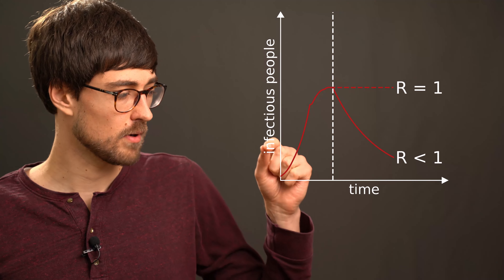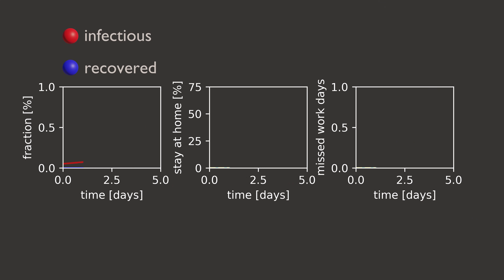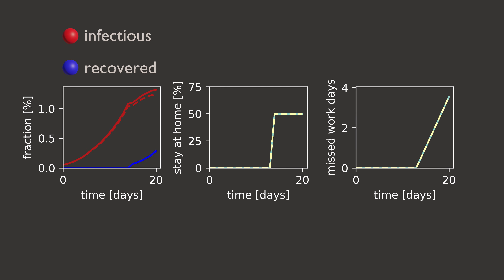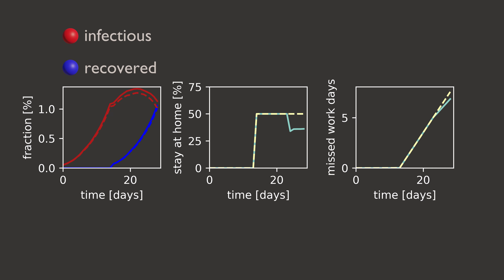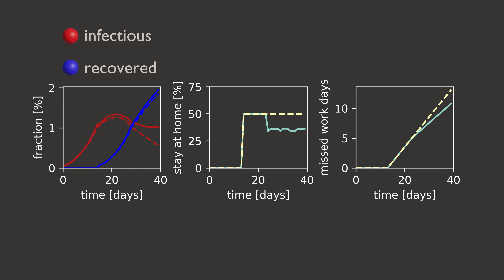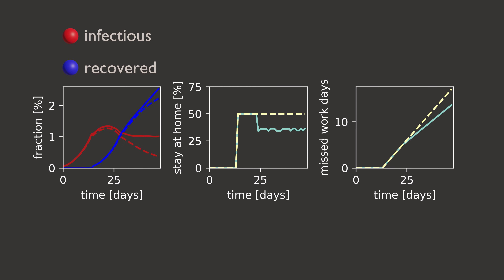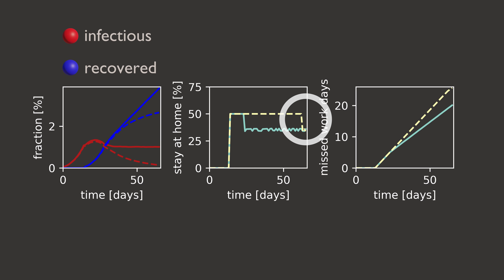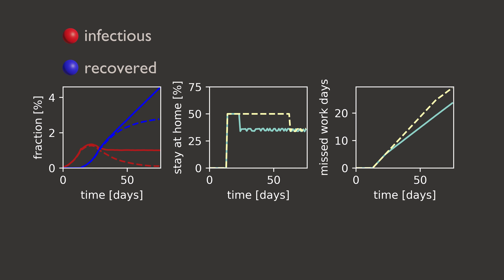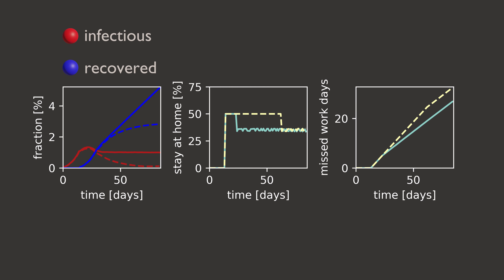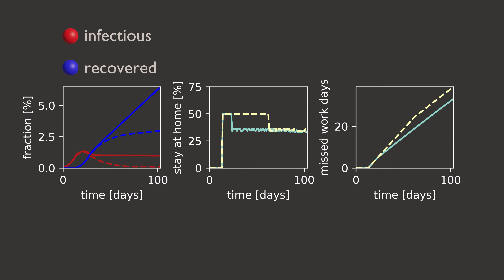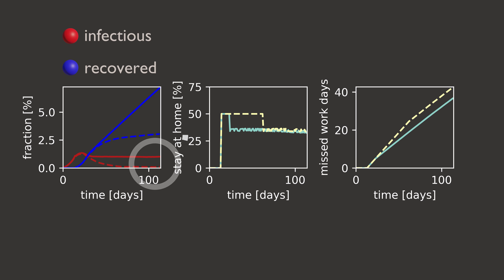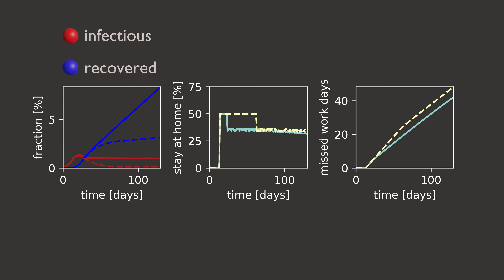The important take-home message is that it is possible to build up immunity with the scenario where we keep R at one, however depending on which fraction of the population is infectious, this happens on a timescale of years rather than months. So let's look at the third scenario where we keep R below one. The solid lines show data representing a government that relaxes measures as soon as and as much as possible but still without letting R rise beyond one. The dashed lines show a government that keeps up the initial stay-at-home fraction for a longer time, then also relaxes as much as possible without letting R rise beyond one. From then on both governments keep roughly the same stay-at-home fraction, but in the dashed case there are considerably fewer infectious marbles and distinctly fewer marbles had to go through the disease.